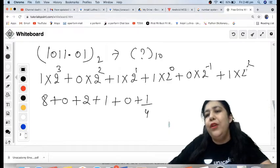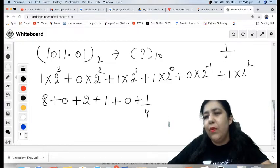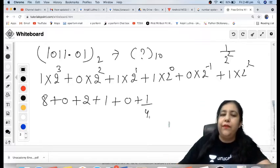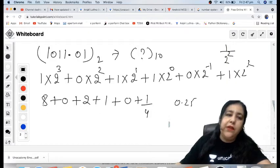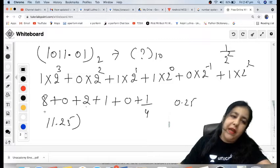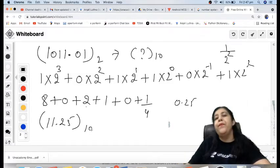So 1 into 2 raised to the power minus 2 means 1 upon 2 raised to the power 2, and 2 raised to the power 2 is 4. So 1 upon 4 is going to be 0.25. So 8 plus 2 is 10, plus 1 is 11, and the answer will be 11.25.